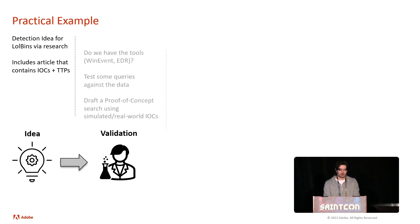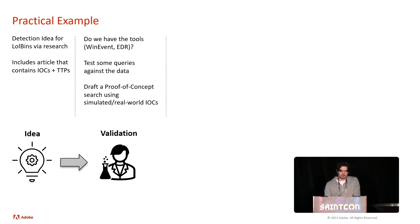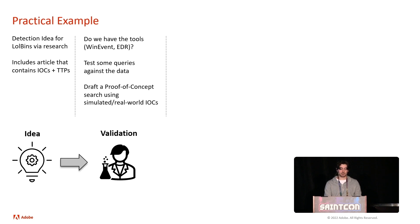So we're going to start by validating that idea. Do we have the tools to make an alert out of this? Do we have Windows event logs? Do we have EDR installed on the endpoints that generate the logs to be able to see and have insight into these hosts that are potentially having these adversarial indicators? We want to test some queries against that data — we'll draft a base query, get some results going, and then start drafting a proof of concept using those results. This is easier when you have simulated data or real-world IOCs to test against, which will help ensure that search will generate the detections when we need them.